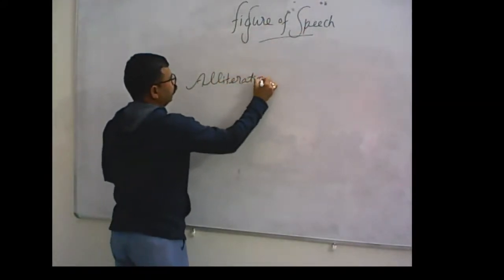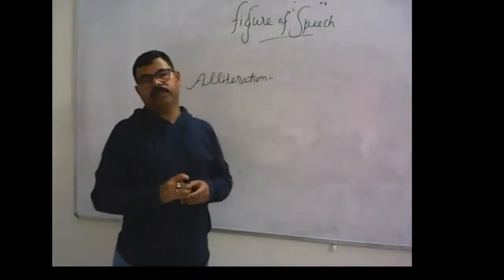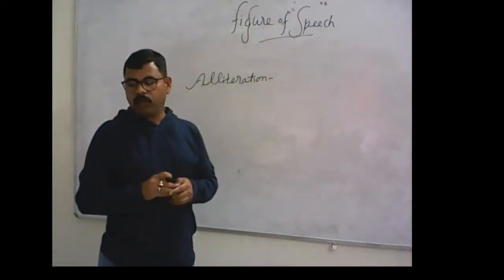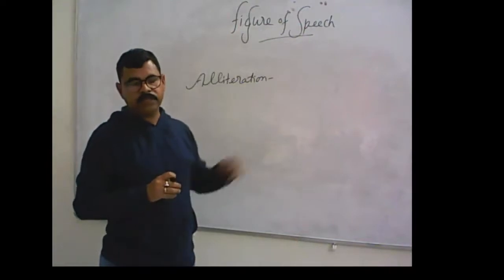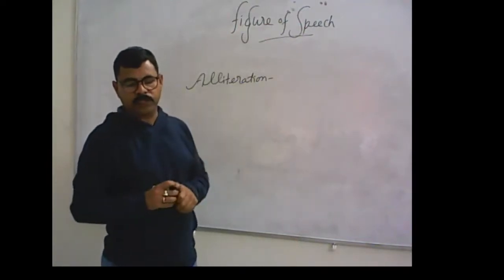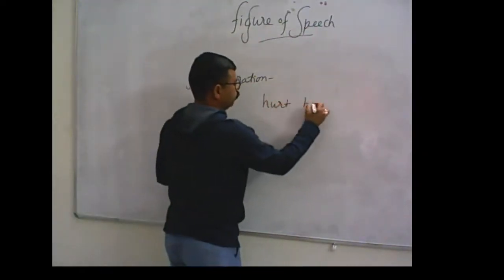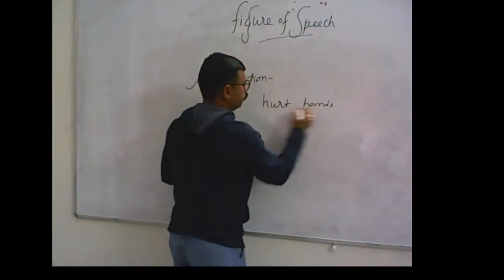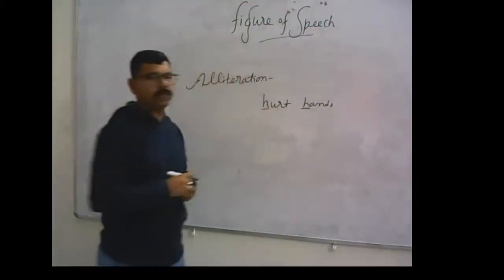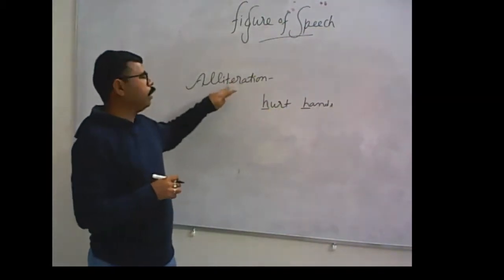Next is alliteration. Repetition of letters is known as alliteration. For example, heard, hence. H and H both are repetition of a letter. That is known as alliteration.